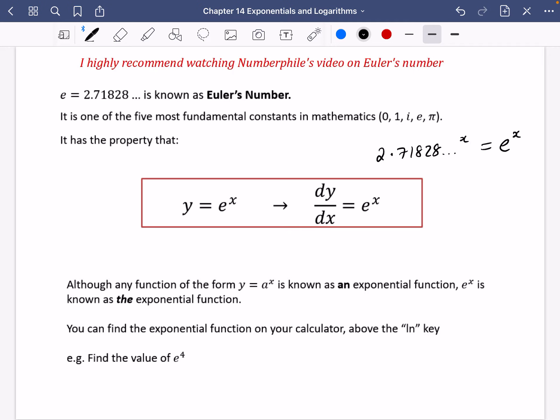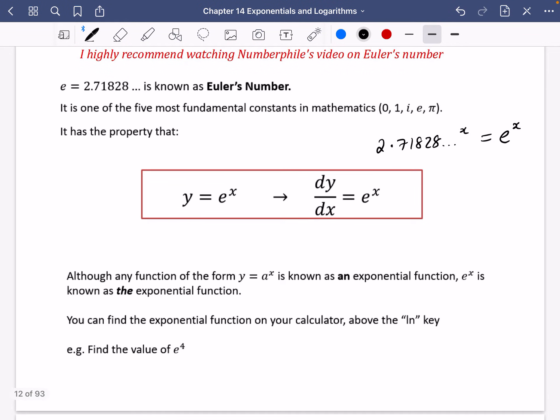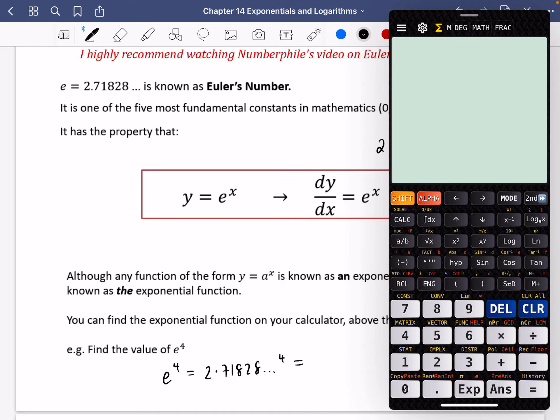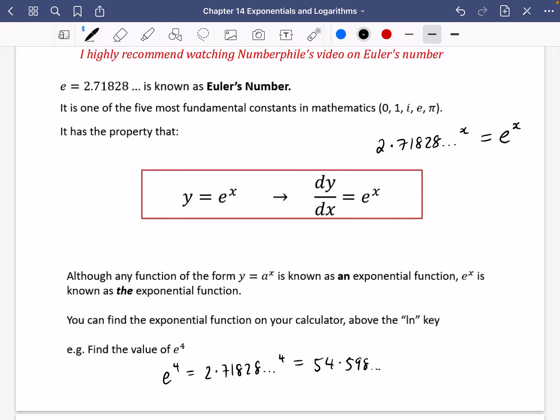And you can find the exponential function in your calculator above the ln key. So when it's asking for you to find the value of e^4, what's actually happening here is you're doing 2.71828... to the power of 4. But we're just going to type this into our calculator and it's just above the ln button. So I'm going to press shift and then I'm going to press the ln button and it automatically puts the power in there. So I'm going to put e to the power of 4. That's its exact form. And I get the real value is 54.598... that's the value of e^4. And you do need to make sure that you can find this on your calculators.